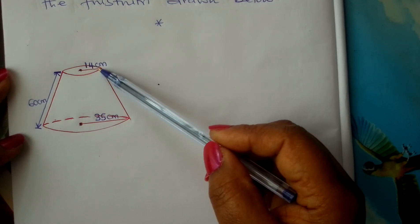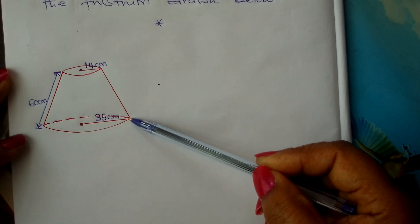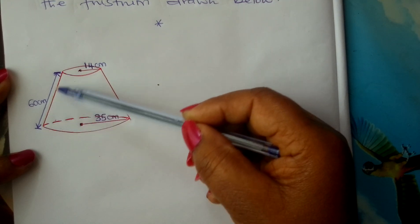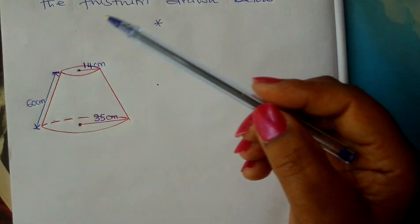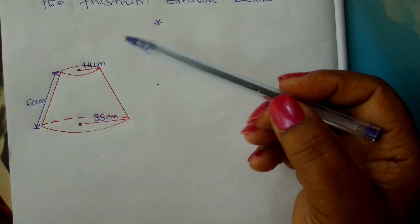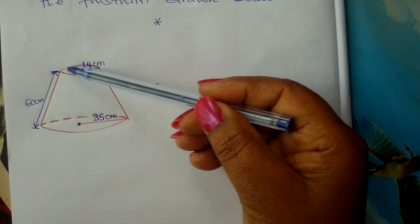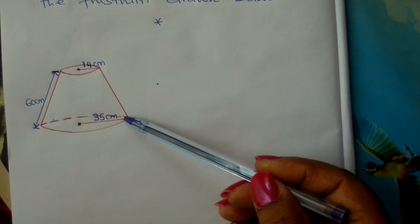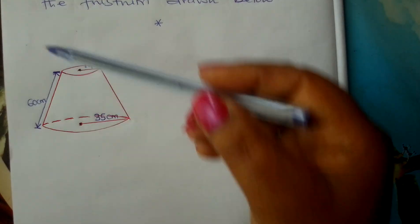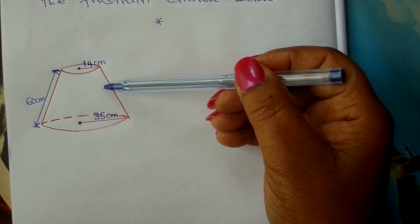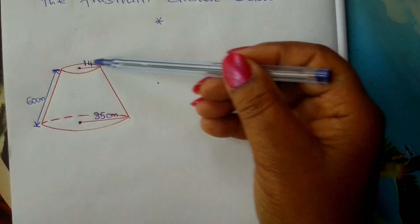We are given the top radius and the bottom radius of our frustum. We are also given the slant height of our frustum. This solid has three surfaces: the top circle, the bottom circle, and the curved surface of our frustum.